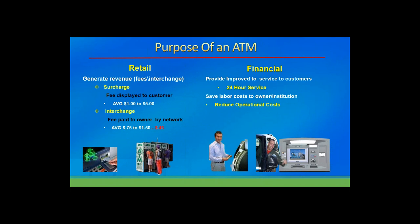ATMs can basically be divided almost in half — they are two separate businesses completely. The first is the retail or ISO market — independent service operators who deploy ATMs in convenience stores, consumer centers, grocery stores, and supermarkets. They're there for one reason: to generate revenue for the owners. That revenue comes in two forms. One is the surcharge, which ranges from one to five dollars, running about two dollars and fifty cents on average today.